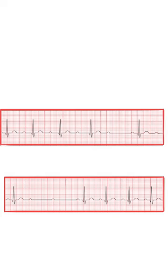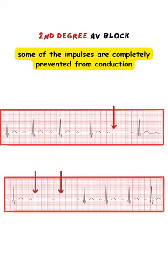With second degree AV block, some of the impulses coming from the atria are completely prevented from conduction to the ventricles. There are two types of second degree AV block.